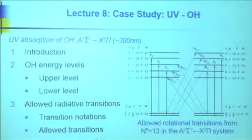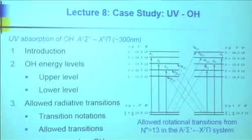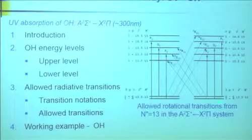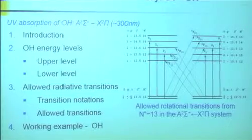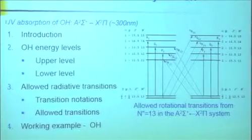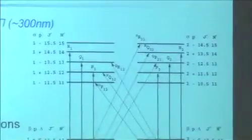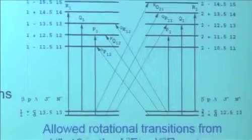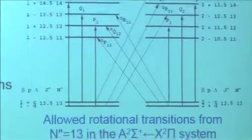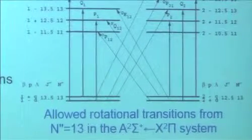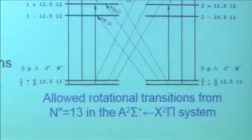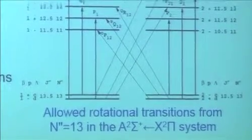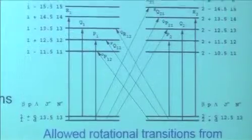This is about as bad as it ever gets for a diatomic molecule. You end up drawing diagrams like this that show you the energy level structure. We're going to look at the energy level structure in both the ground state and the upper state.